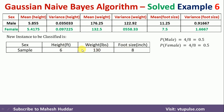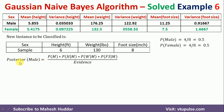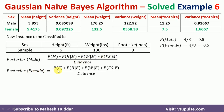We want to classify this example into one of the classes — either male or female. So we calculate the posterior probability of male as well as posterior probability of female. The posterior probability of male equals: P(male) × P(height|male) × P(weight|male) × P(foot size|male), divided by evidence. Similarly, the posterior probability of female equals: P(female) × P(height|female) × P(weight|female) × P(foot size|female), divided by evidence. Since evidence is common in both cases, we can remove it and just calculate the numerator to classify the new example.